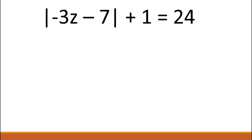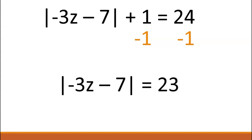Let's take a look at another example: the absolute value of negative three z minus seven, plus one, equals 24. First, simplify this expression by subtracting one from both sides. You are left with the absolute value of negative three z minus seven equals 23.